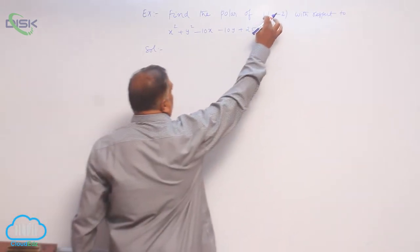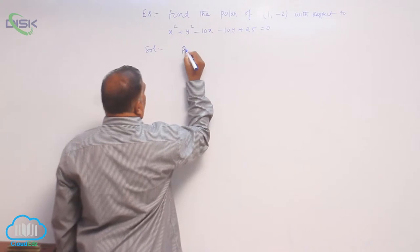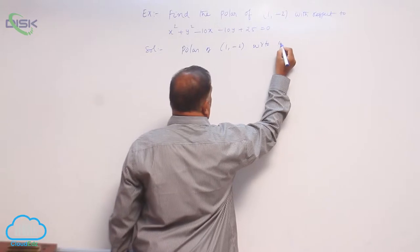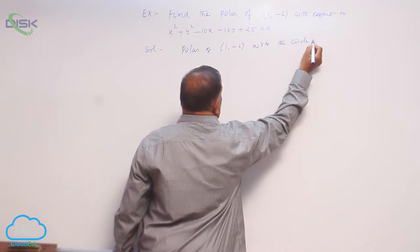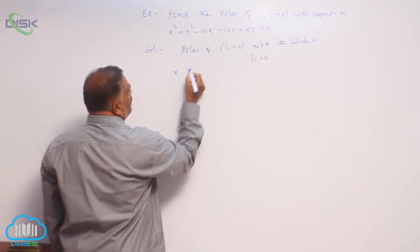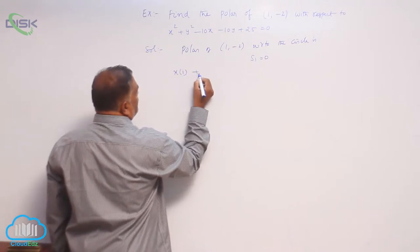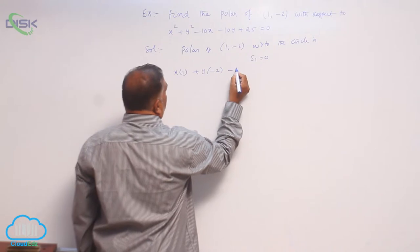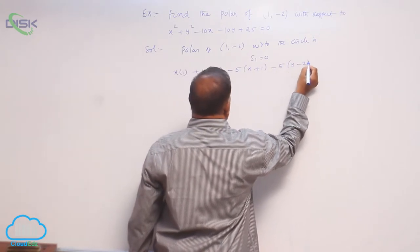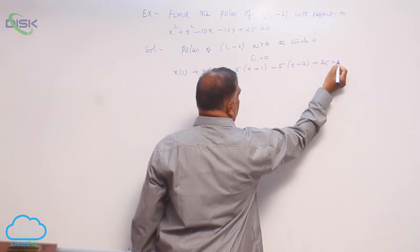Let us see here 1 comma minus 2. Polar of 1 comma minus 2 with respect to circle is s1 is equal to 0. Now x into 1 plus y into minus 2 minus 5 into x plus 1 minus 5 into y minus 2 plus 25 is equal to 0.